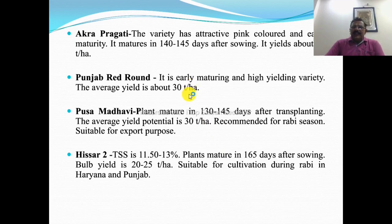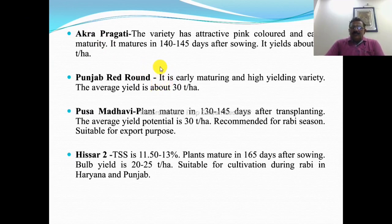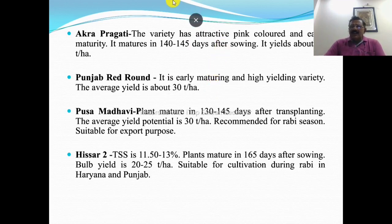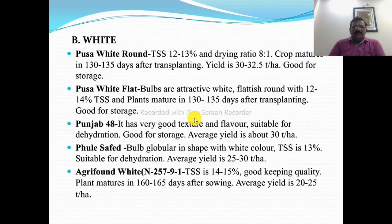Punjab Red Round is an early maturing and high yielding variety with productivity of about 30 tons per hectare. Pusa Madhvi matures in about 135 days after transplanting with average yield potential of 30 tons per hectare. These varieties are also recommended for Rabi cultivation.